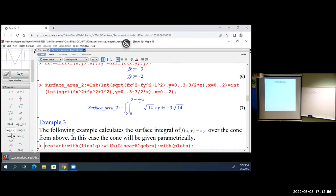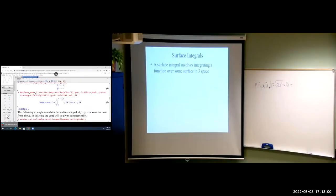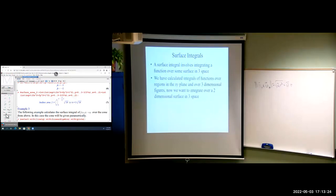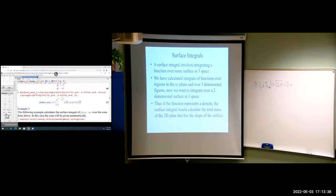Let's move on to the new stuff: surface integrals. With double integrals we were integrating over a region in the xy-plane. Surface integrals allow us to integrate over any two-dimensional surface — it's no longer restricted to the 2D plane, and that's the biggest difference. For example, if the function we're integrating over was a density, what we'd get as a result is the total mass of that 2D surface — just to give an idea of what we're looking at.